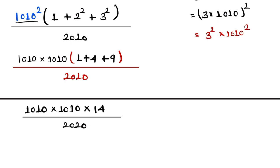Now we divide this by 1010 by 2 and 2 divide the 14 by 7. Here this remaining part is 7 into 1010.